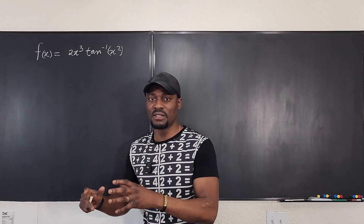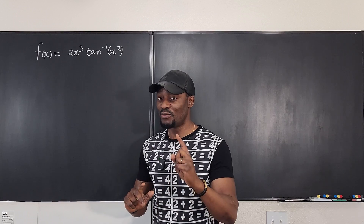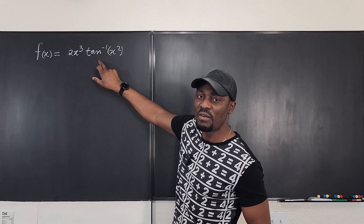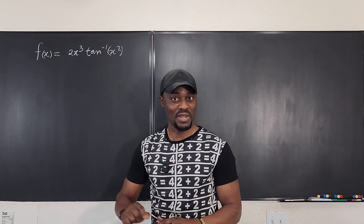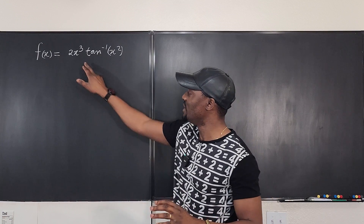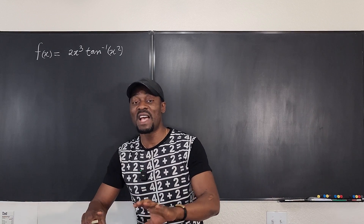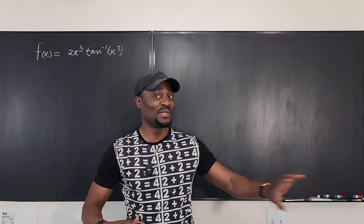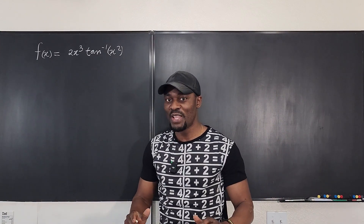If it was sine or cosine we could use the memorized power series, or even tangent, but this is arctangent. So we ask: is there any form of arctangent that is a rational expression? If you recall from Calculus 1, the derivative of arctan is 1/(1+x²). We're going to deal with the derivative — if we can express the derivative as a power series, then we can integrate that power series to get the power series for the original function.